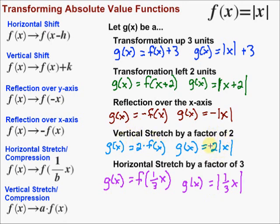Notice the difference: a vertical stretch sits on the outside, whereas a horizontal stretch pops into the inside of the absolute value. We could also graph all of these functions and compare them to the parent function — that absolute value of x — and you would find that these transformations have happened: movement up three, left two, and so on. If you want to check those, you certainly can.